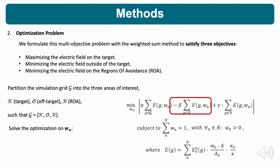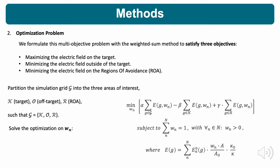The objectives are: maximizing the electric field on the target, minimizing the electric field outside of the target, and minimizing the electric field on the region of avoidance — the regions whose stimulation causes side effects. What is unique about our work is that each objective has a corresponding weight, so according to the patient's case you can prioritize one objective over another.